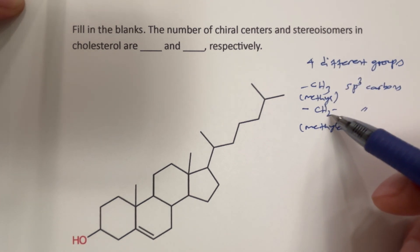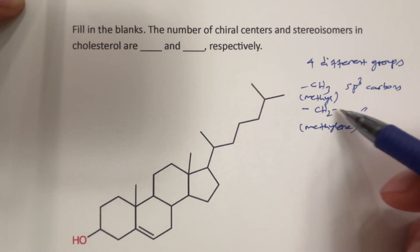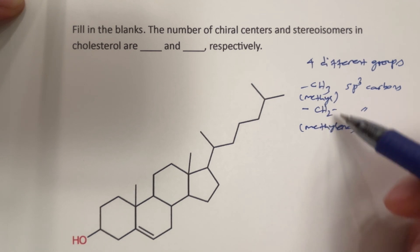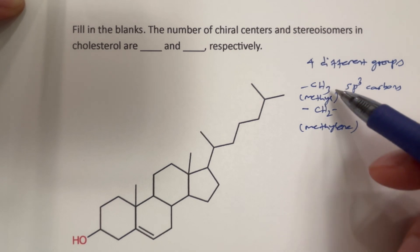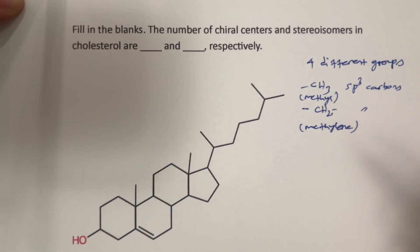Likewise, in a methylene group we have two hydrogens. So if it is connected to two different things, then in total it becomes three different groups, not four different groups. Therefore, the CH3 and CH2 carbons we can definitely eliminate.